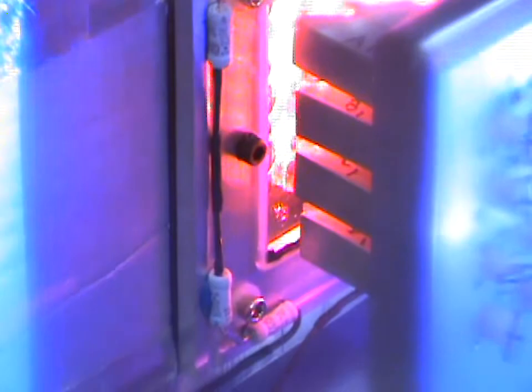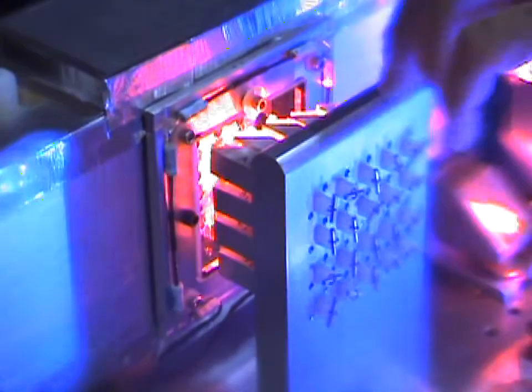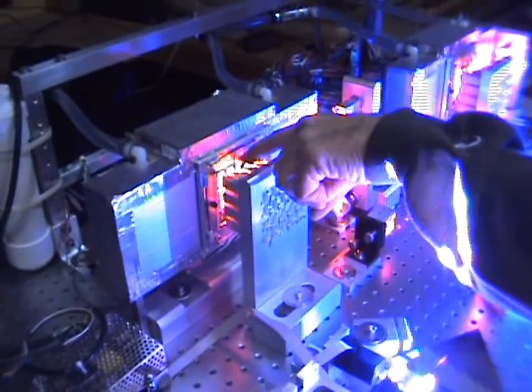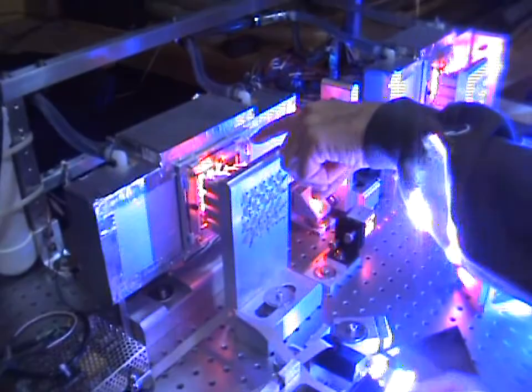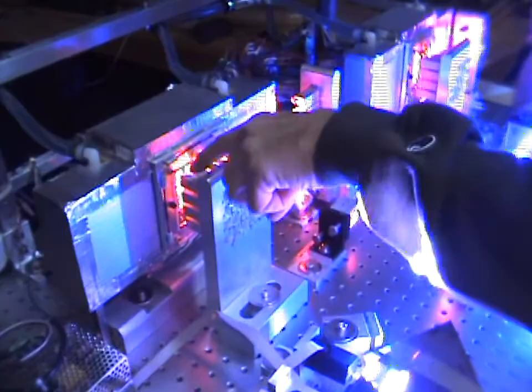Short answer is that that distance provides a challenge for alignment, because it means that the diode being farther from the first knife edge, means that any misalignment in the setup can create a challenge when producing a very straight line.